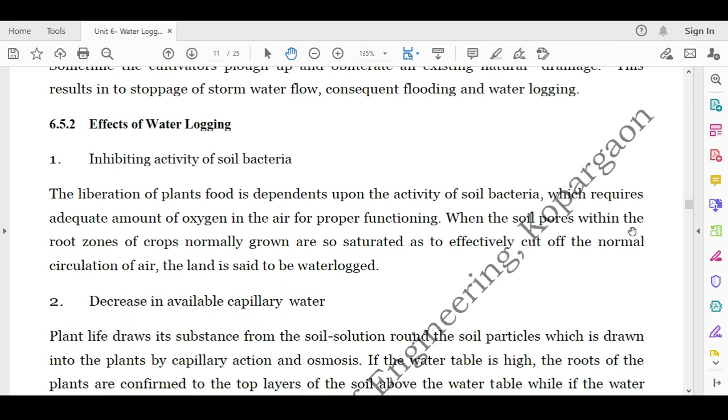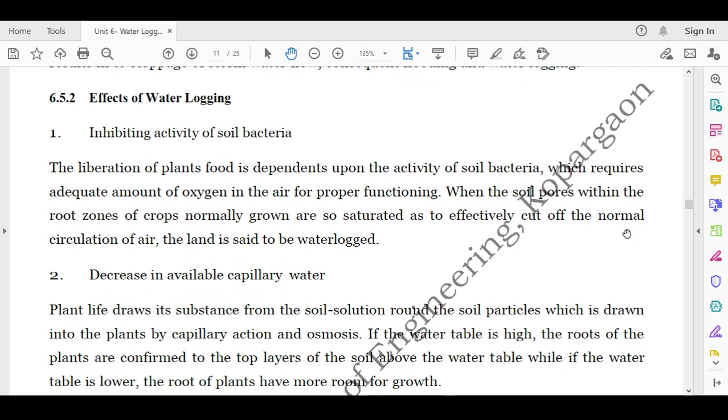Then what are the effects of water logging? Salinity is one of them. There are several effects of water logging which reduces the yield of crop and further they should be avoidable. Out of them, the first one is the inhibiting activity of soil bacteria. The liberation of plant food is dependent on the activity of soil bacteria which requires adequate amount of oxygen in the air for proper functioning.